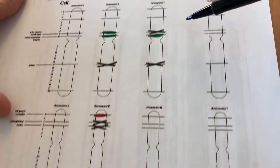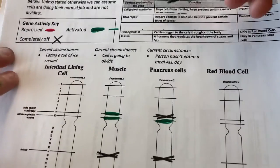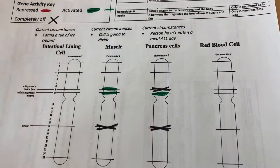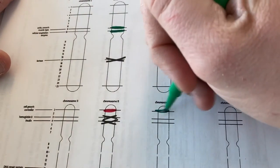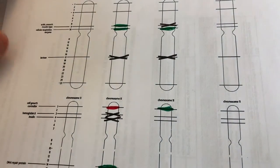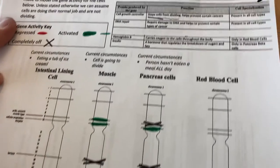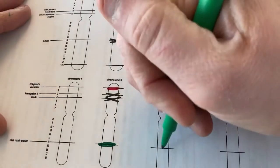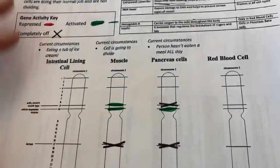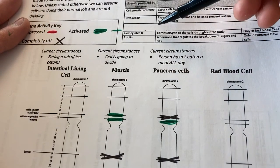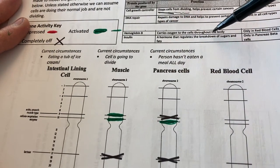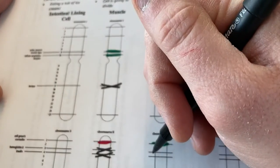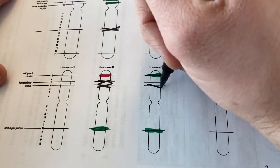For the cell growth controller — the circumstances don't indicate this cell is dividing. Remember, when this gene is on it stops cells from dividing, so it's actually going to be turned on, meaning the cell is not dividing. DNA repair protein is present in all cell types, so that's going to be turned on as well. Hemoglobin is only in red blood cells, so it's completely off in this pancreas cell.